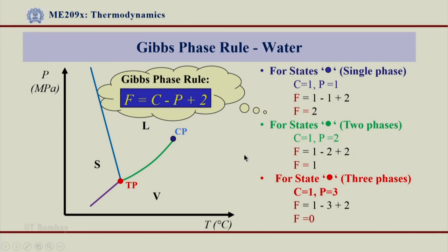This is how we define degrees of freedom or properties for a given system which may lie in a single phase region, a two-phase region, or at the triple point. This is the application of Gibbs phase rule for water.